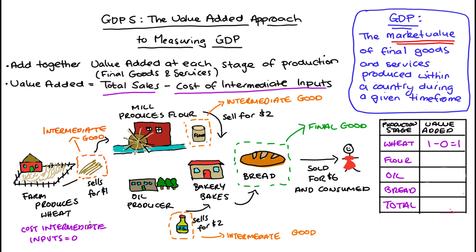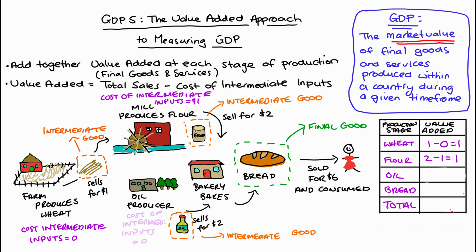The mill's cost of intermediate inputs is equal to one — that's how much they bought the wheat from the farm for — and they sell the flour for $2. So the value that the mill has added is two minus one, so one. For the oil, let's say the cost of intermediate inputs was zero, so the value added would be two — that's total sales of $2 minus zero.